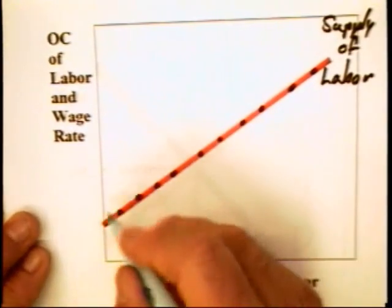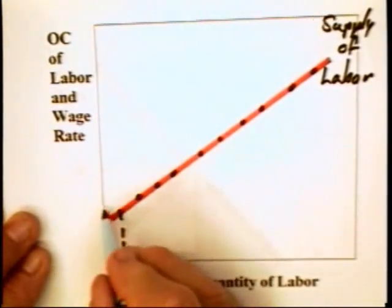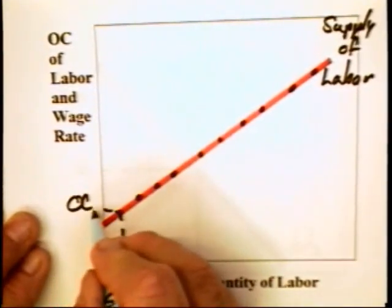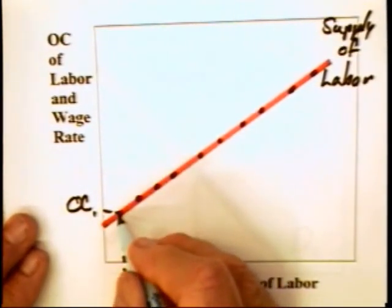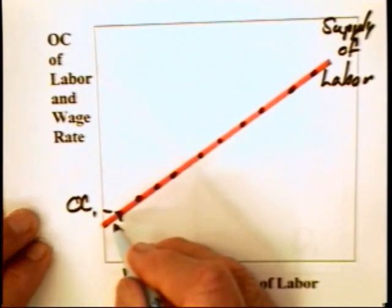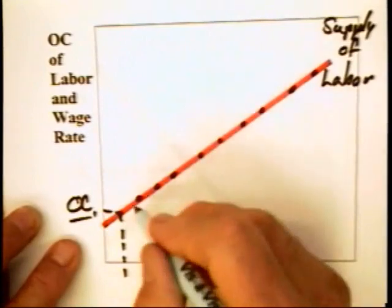That is, there's going to be some worker who has an opportunity cost equal to OC1. Well, that worker is not going to come on to the market unless that worker gets a wage that fully compensates him or her for their opportunity cost.